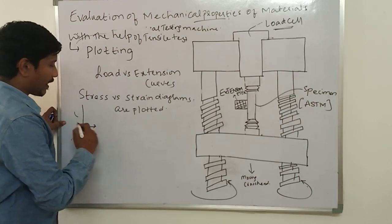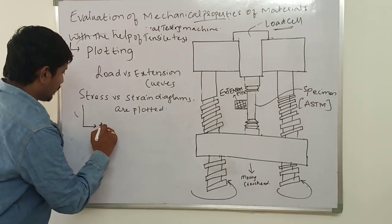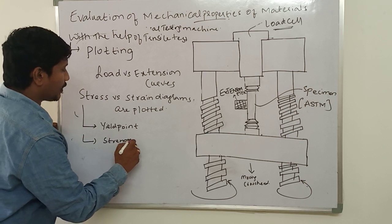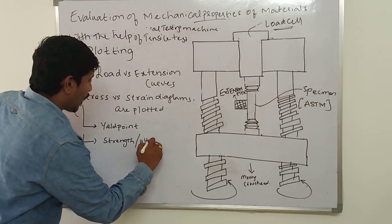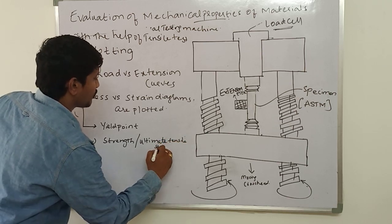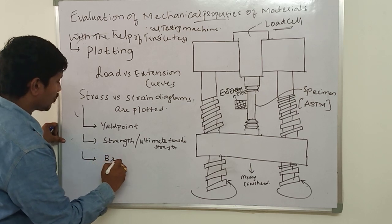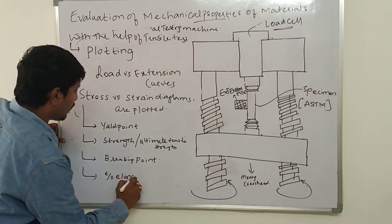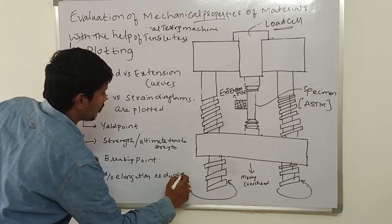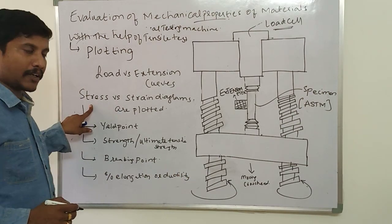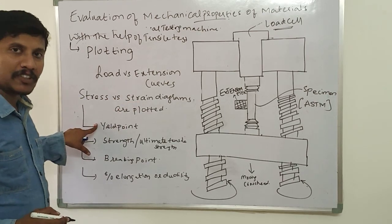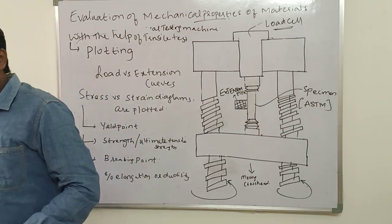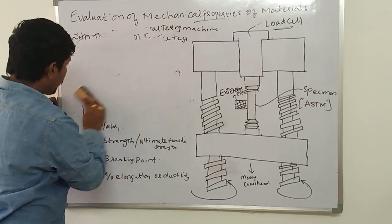With the help of the stress versus strain diagrams, we can find out properties like yield point, ultimate tensile strength of the material, breaking point, and percentage of elongation or ductility. So the major intention is to plot the stress-strain diagram.